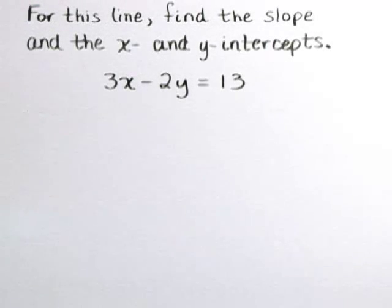For this line, find the slope and the x and y intercepts. Our line is 3x minus 2y is equal to 13.